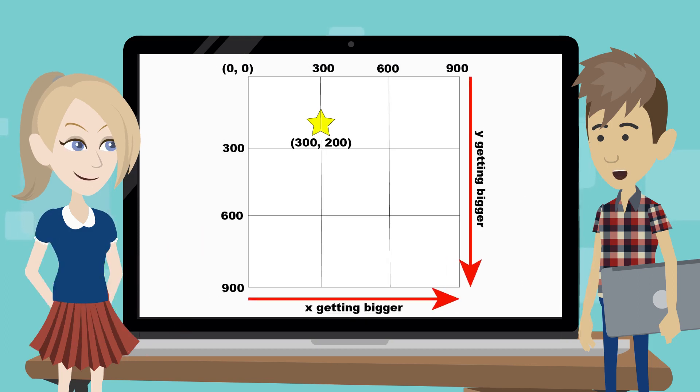The first number is the x-coordinate, which shows how far to the right an object is. The second number is the y-coordinate, which shows how far down the object is. In math, the coordinate 0, 0 is usually at the bottom left, but in computer graphics, it's almost always the top left.